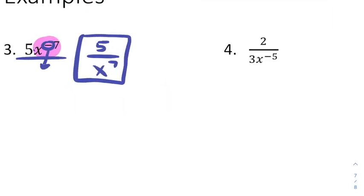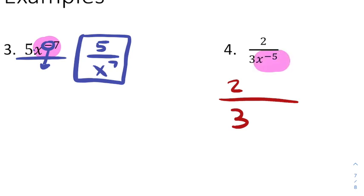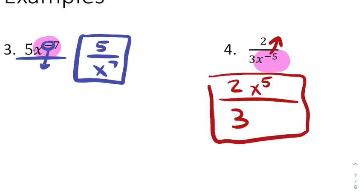Similarly, in example 4, the negative 5 is just attached to the x. The 3 is separated by multiplication, so the negative symbol tells me this x to the 5th is on the wrong side of the fraction and needs to move up. Nothing told the 2 or the 3 to move, so they stay on the top and bottom respectively. This x moves to the top, giving us 2 times x to the 5th all over 3.